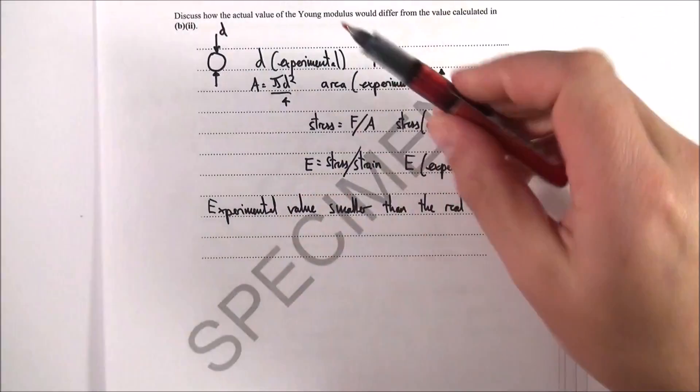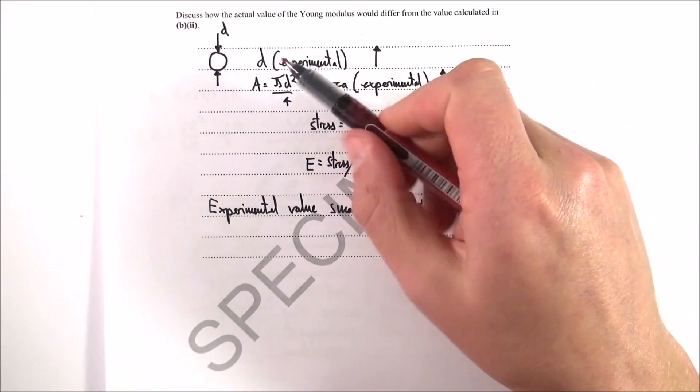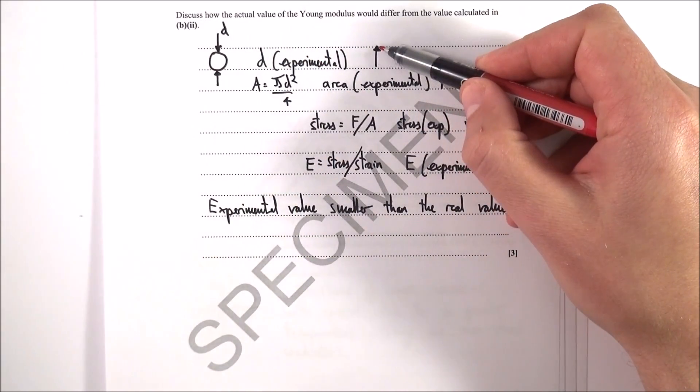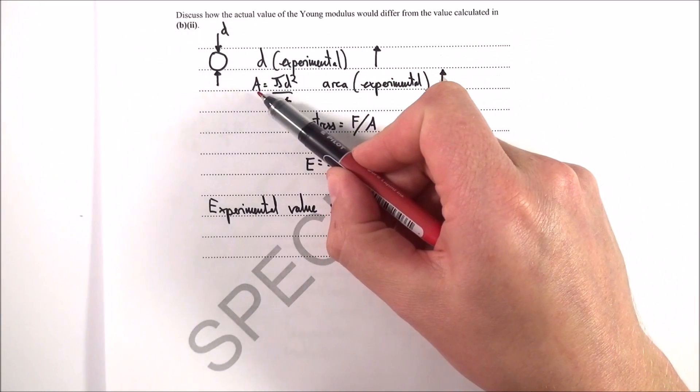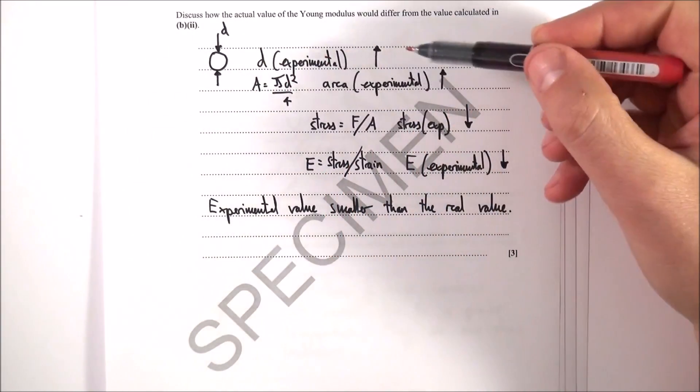A zero error is where you basically record a reading when the device is held at zero but it's still giving a reading. What I said is that the experimental value they got for the diameter of the wire was too big.